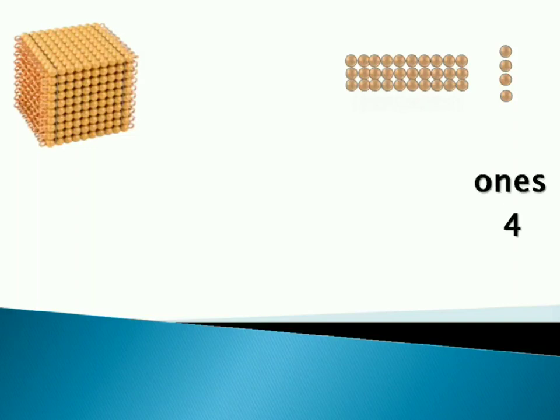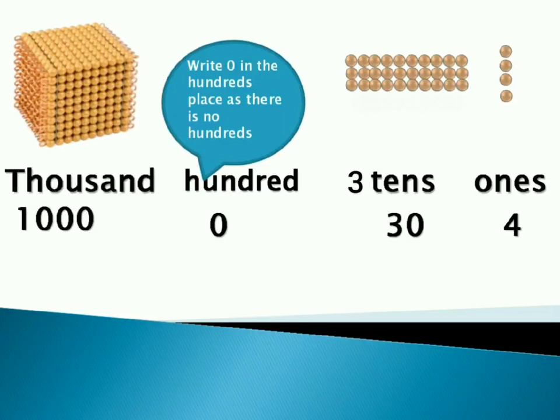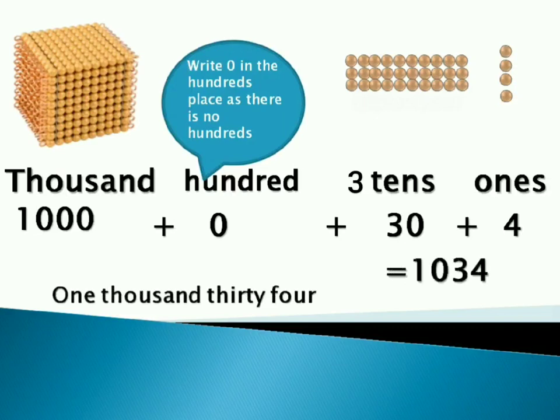Four ones. Three tens is thirty. Zero hundred. Write zero in hundreds place as there is no hundreds. Then one box of thousand. So number becomes 1034. That is one thousand thirty four.